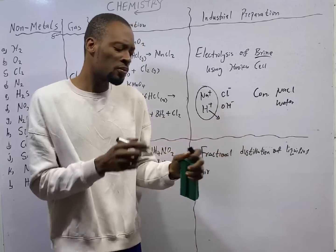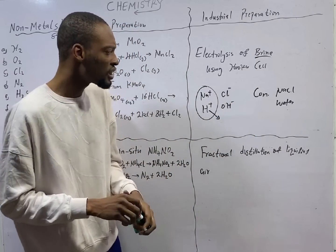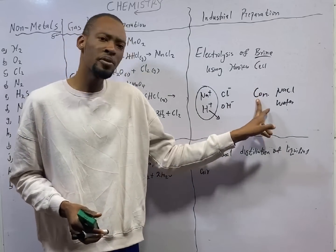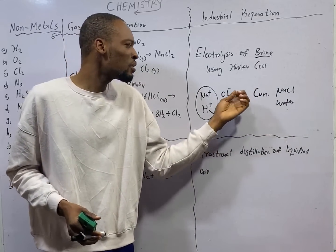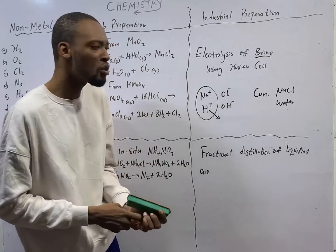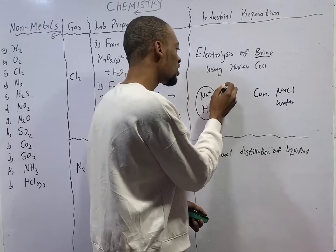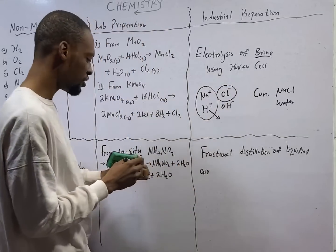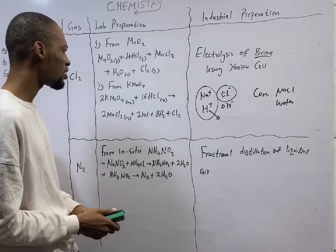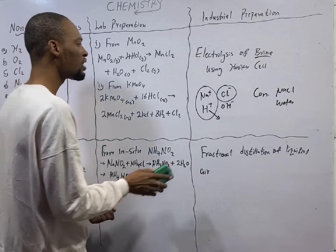Chloride ion and hydroxide ion - hydroxide ion is lower than chloride ion in the series. But because we are dealing with concentrated sodium chloride and the distance between chloride ion and hydroxide ion in the series is not very far, concentration will play a role and chloride will be preferentially discharged. So, electrolysis of brine using Hooker cell will give us chlorine gas.